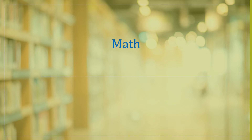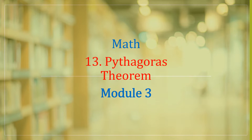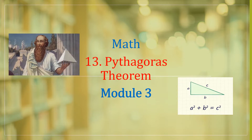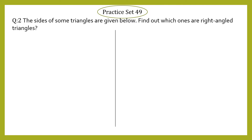Good morning students. Let's continue with Chapter 13, Pythagoras Theorem, Module 3, Practice Set 49, Question number 2. The sides of some triangles are given below — find out which ones are right triangles.